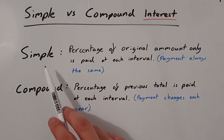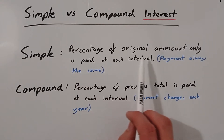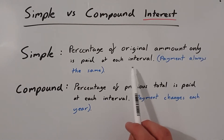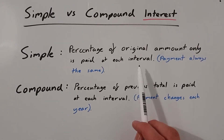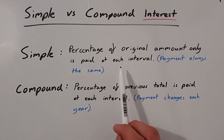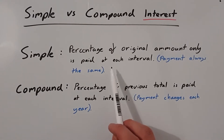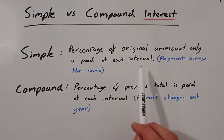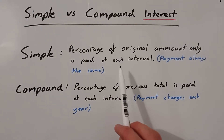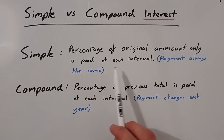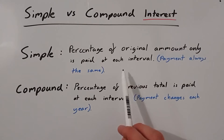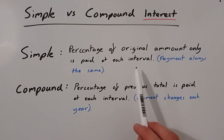Starting with simple interest: simple interest is when a percentage of the original amount only is paid at each interval. With bank accounts the interval is usually each year, so the original amount would be the original amount you paid into that bank account. Say you paid a thousand pounds into the account and the interest rate was 10% per year — with simple interest every year you'd get paid 10% of that original thousand pounds, so 10% of a thousand is £100. Every year after you would get £100 exactly, no matter how much money you had in the account.